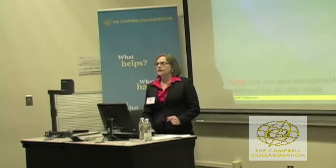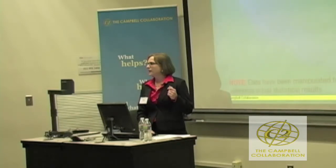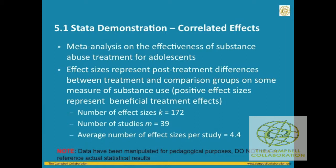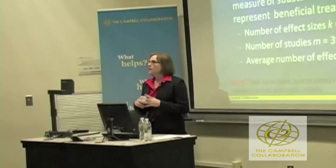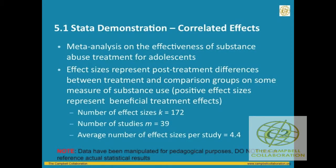I want to start with an example of the correlated effects case — the case where you have correlated epsilons. I'm going to use a meta-analysis I worked on looking at the effectiveness of substance abuse treatment programs for adolescents with drug use disorders. Please note the disclaimer: I've manipulated this data to come out certain ways, so do not cite the actual results here. It started from our actual original data. We have standardized mean difference effect sizes measured at post-test, representing differences in drug use outcomes between kids in a treatment condition versus a comparison condition.